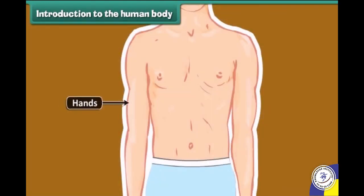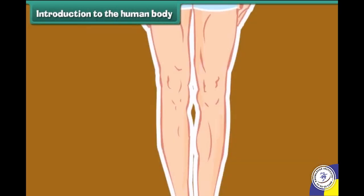Then we come to the hands, which help us to hold things. Another body part is the stomach. It is a kind of a bag where all the food that we eat gets stored for digestion. And finally, our legs help us to stand straight, walk, run and play.